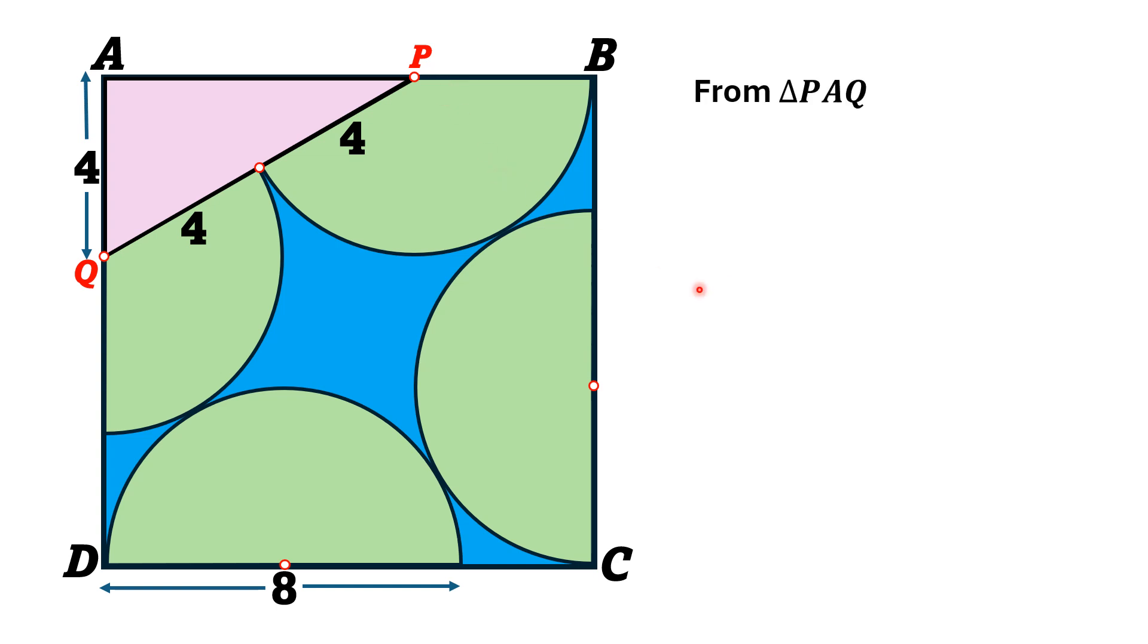From the triangle PAQ, PA squared is equal to hypotenuse square minus this leg square. So, PA squared is equal to PQ square minus QA square and PQ is 8 and Q is 4. So, PA square is equal to 64 minus 16, PA square is equal to 48 and if we take square root on both sides, then PA is equal to 4 times square root of 3.